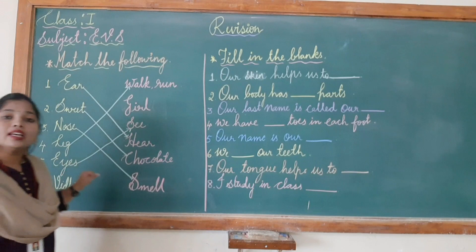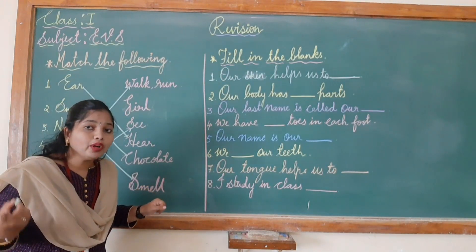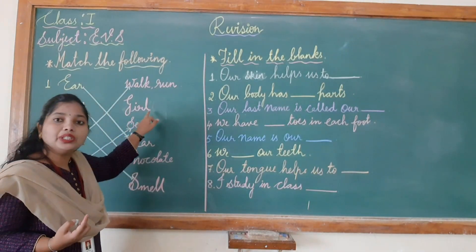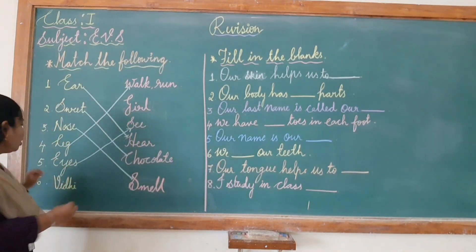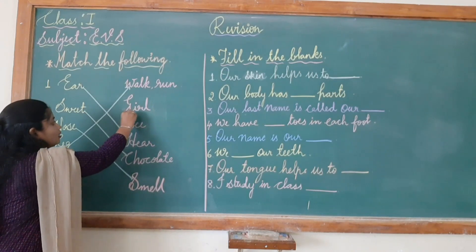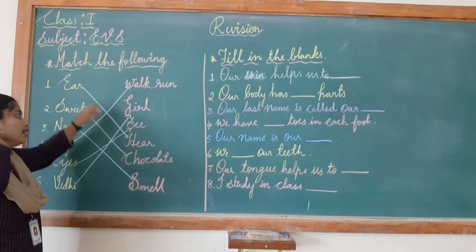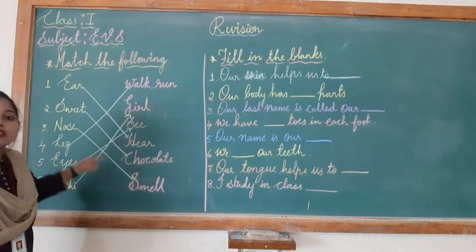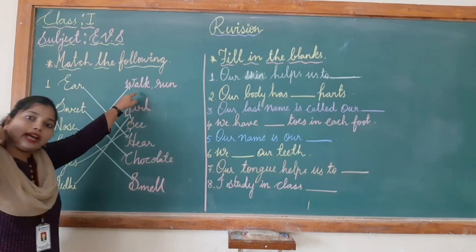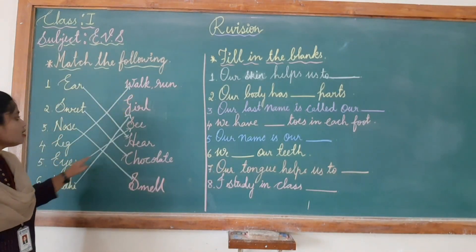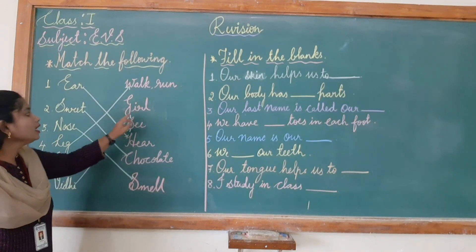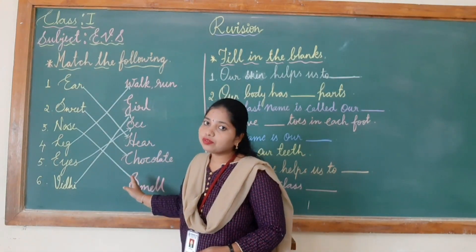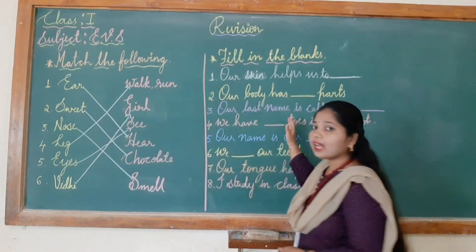Next, Vidhi. In 'About Me' I have learned that Vidhi is a girl. So I will join Vidhi to 'girl'. So children, the matches are: ear-hear, sweet-chocolate, nose-smell, leg-walk or run, eyes-see, Vidhi-girl. These are the six match the following answers. Now let us go to the next part.